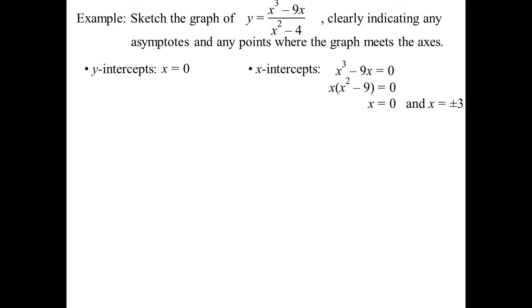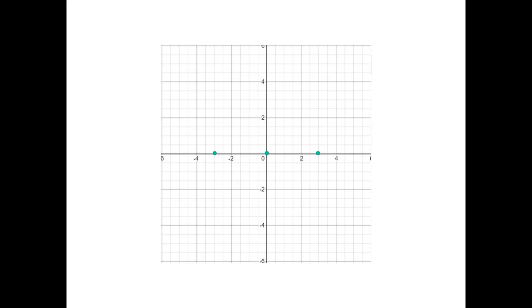y-intercept, that's when x equals zero. x-intercepts, that turns out to be x equals zero and x equals plus or minus 3. So straight away, I know it goes through the origin. Because if the x-intercept is zero and the y-intercept is zero, so let's plot those. So there's those three points that we now know.